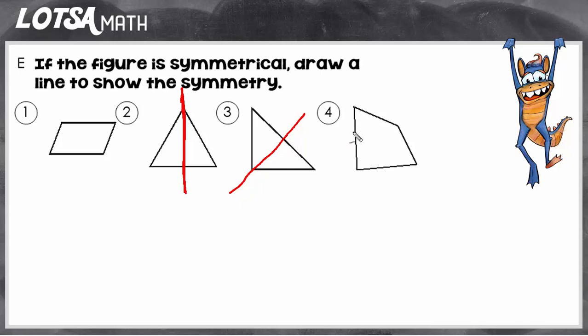So look at number four. I don't see any place where I could draw a line and have two pieces that are exactly the same. So in that case, this shape would not have symmetry.